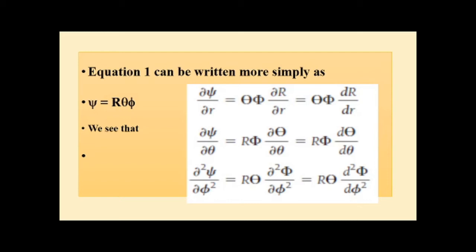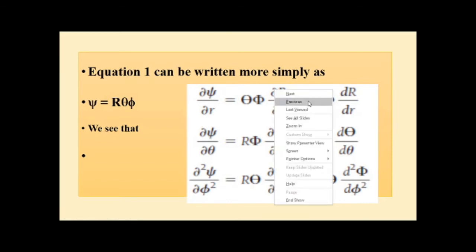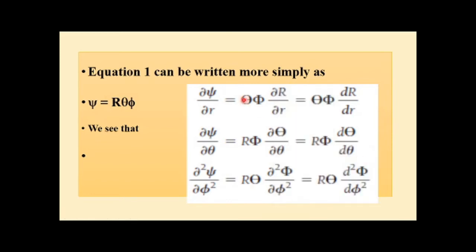For the partial derivative dψ/dr: since capital R depends only on small r, capital Theta and capital Phi are constants. Therefore what we get is capital Theta times capital Phi times dR/dr. This is also equal to dR/dr directly, because partial and full derivatives are equal in this case.